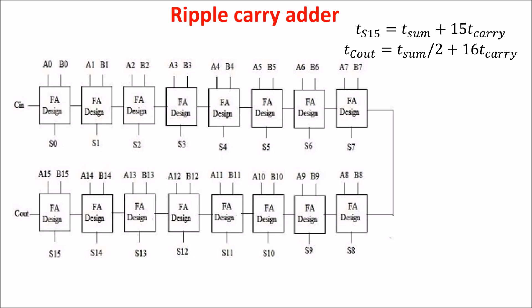So, if we consider a 16 bits ripple carry adder, we have to wait the larger between T sum over 2 plus 16 T carry and T sum plus 15 T carry for having stable data on the output. We assume the largest between the two times is the time of the last sum, so T has 15, so T sum plus 15 T carry. So, in general, we assume the ripple carry adder delay is this one.